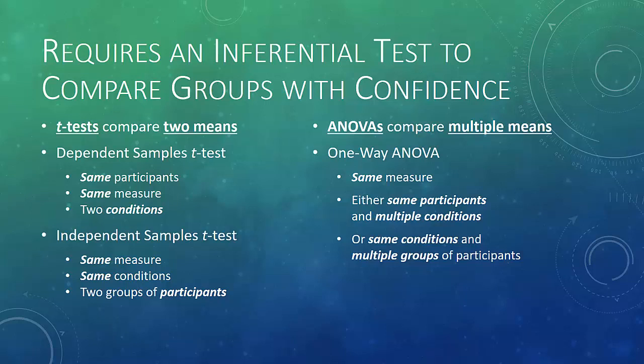ANOVAs use very similar mathematics to the t-test, at least the one-way ANOVA does, but ANOVAs are designed to compare multiple means. With a one-way ANOVA, we use the same measure and either use the same participants under multiple conditions — maybe three, four, or eight conditions depending on our design — or we look at the same conditions with multiple groups of participants. As we move into the next couple of videos, we'll demonstrate the different varieties of t-test and a one-way ANOVA so you can see how that works.